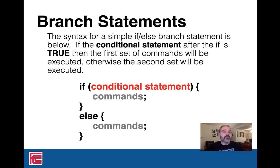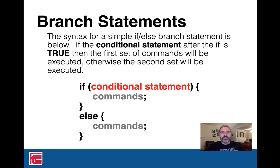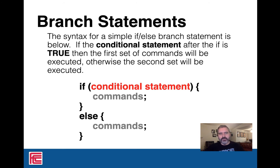The two blocks are mutually exclusive — we are either going to do the first block of commands or the second block of commands, but never both. It's a fork in the road. After the if-else, after that last curly brace, we reconverge. Anything written after will be executed regardless of the conditional statement, because we've passed the fork and merged back together.